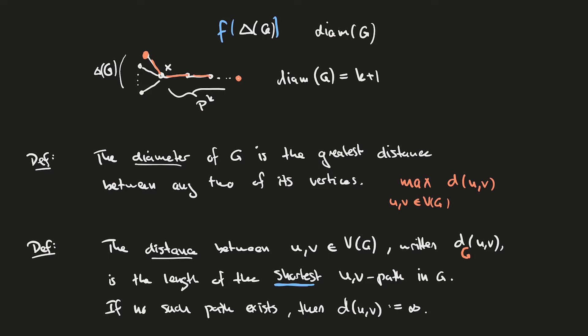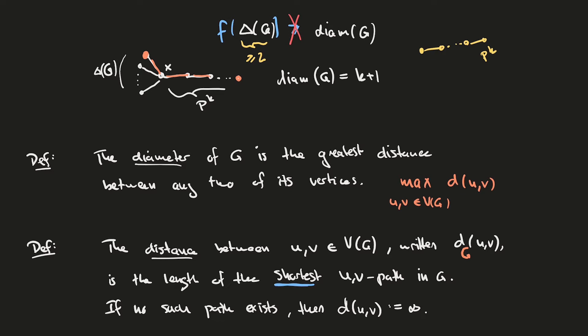Conversely if we assume that we can bound the diameter by some function of the maximum degree: as long as the maximum degree of G is greater or equal to 2 we've seen that we can just take the path P_k which has diameter k and this can be made arbitrarily large. So it's not possible to bound the diameter by some function of the maximum degree provided that maximum degree is greater or equal to 2. Therefore we've shown that these two parameters can't be related to each other in any obvious way. On the contrary, the girth of a graph G and its diameter are related with each other, and this is the content of the next proposition that we'll prove.